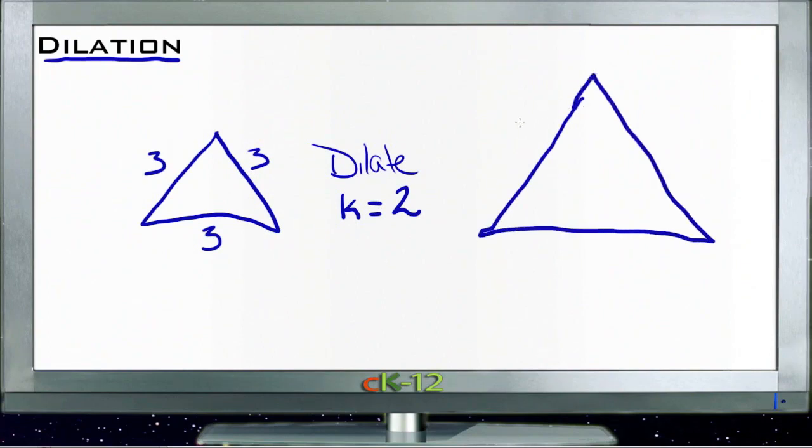There has to be a k factor - in other words, we have to know what that relation to the original figure is. And we also have to know what the center of the original figure is or the center of our dilation, so that we know which direction to expand things in.